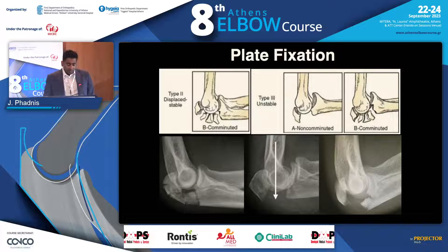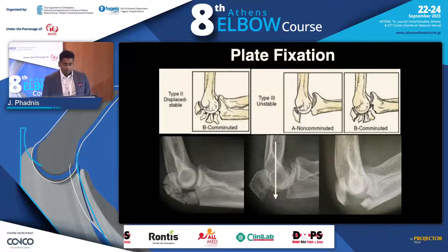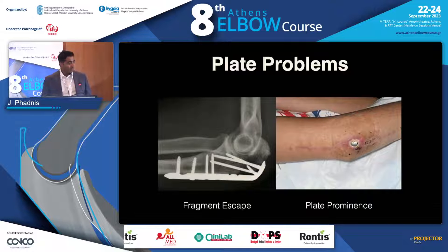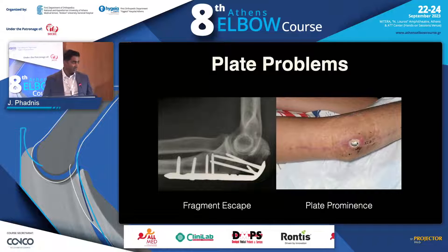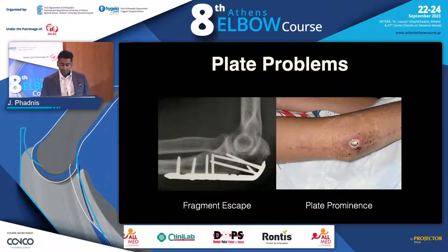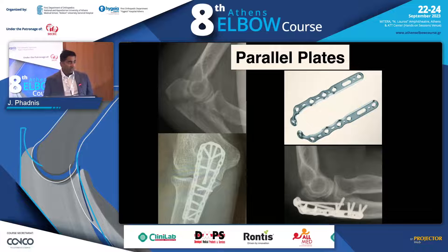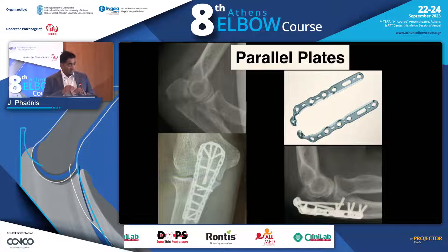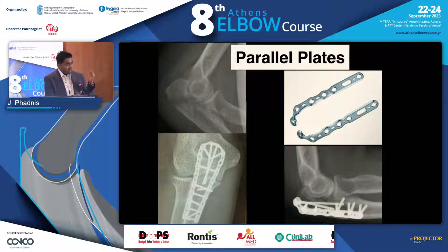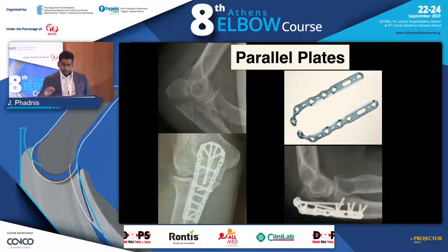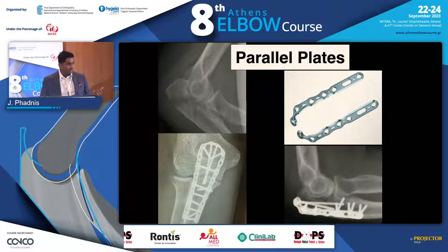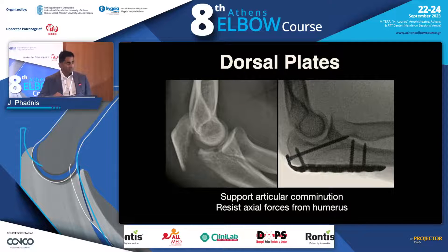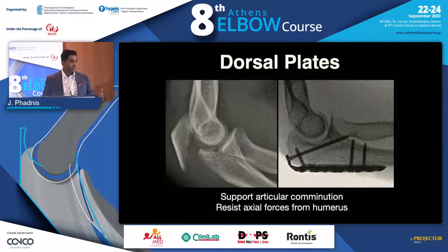When do we use plates? We use plates for unstable type 2 fractures or highly comminuted fractures that may also be unstable. Plates do have problems though: we can get fragment escape, plate prominence, or wound breakdown. One technique is to use parallel plates — we often use these in older patients who have a much worse soft tissue envelope, especially women with very slim arms, where avoiding plate prominence is important. Dorsal plates are excellent for supporting axial forces and articular comminution, and that is the traditional way of fixing these fractures with plates.